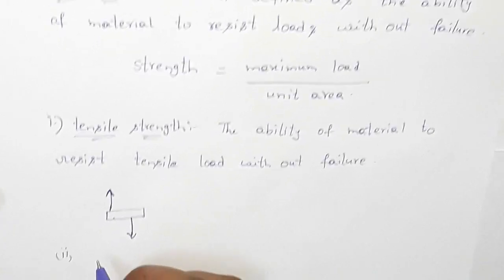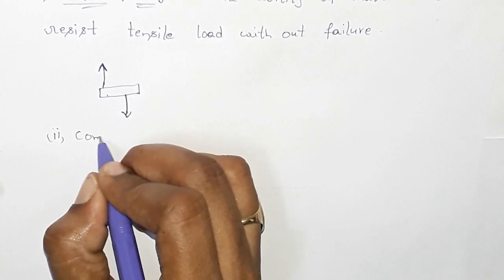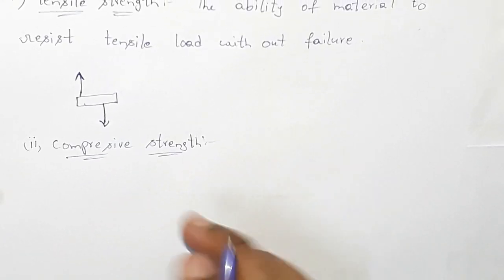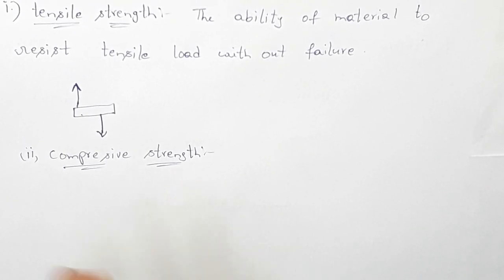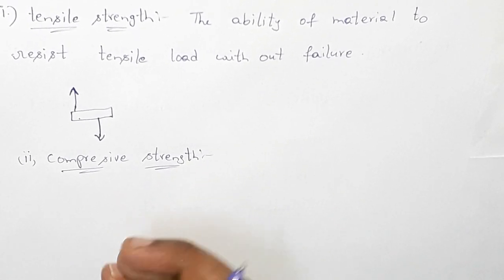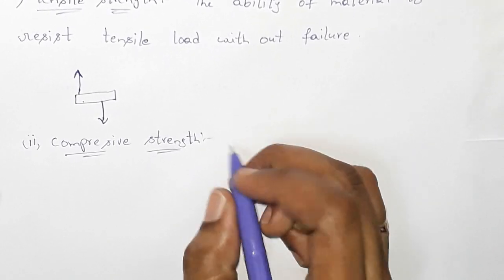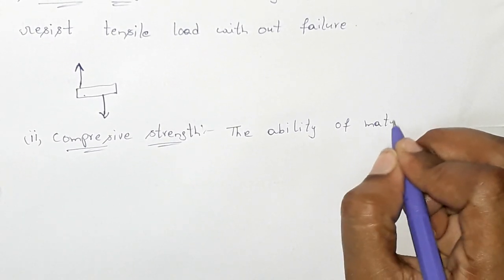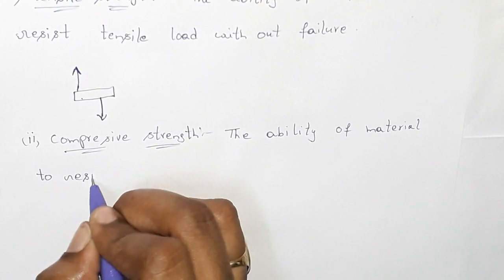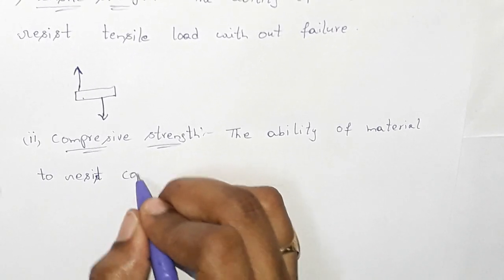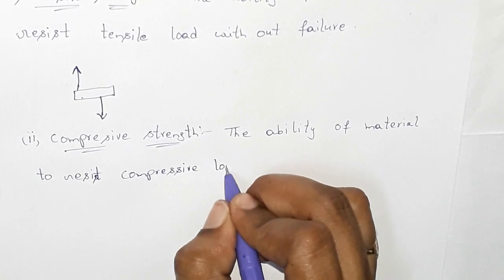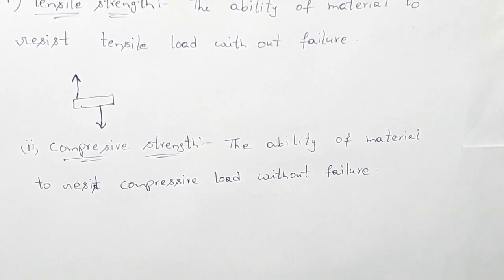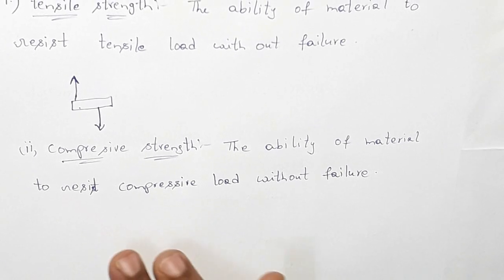Second one: compressive strength. Compressive strength — compressive load acting. Tensile strength relates to tensile load acting; compressive strength relates to compressive load acting. The ability of a material to resist compressive load without failure.